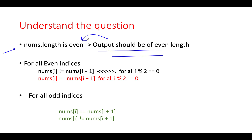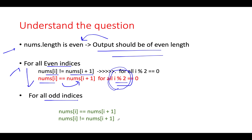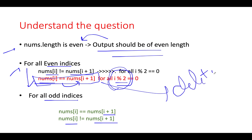For all even indexes, you cannot have the current element equal to the next immediate element in your beautiful array. This also gives another hint: for all odd indexes, both conditions can be treated as valid — nums[i] == nums[i+1] or nums[i] != nums[i+1]. To reiterate, at all even indexes we can't have nums[i] equal to nums[i+1]; whenever we see such a case, we must perform a deletion.